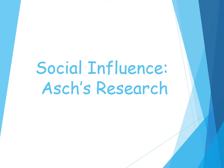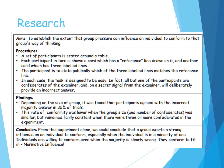Asch's research. The specification requires you to know the variables affecting conformity, including group size, unanimity, and task difficulty as investigated by Asch. So we're going to go into those in a little bit more detail. In terms of Asch's research, he wanted to establish the extent to which group pressure can influence an individual and whether they would conform to a majority group's way of thinking.